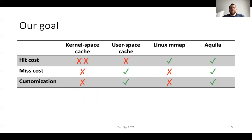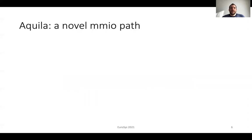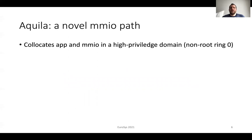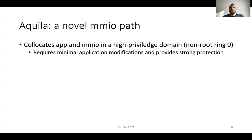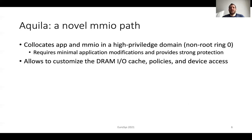Our work, named Akila, overcomes all of the Linux EMAP disadvantages. We leverage the efficient hit path of memory mapped IO and we provide an optimized miss path that removes the need for protection domain switches. We also enable customization of DRAM caching and device access similar to a user space cache. Our approach combines the advantages of a user space cache and memory mapped IO. Akila is a novel memory mapped IO path that collocates the user application and memory mapped IO path in a high-privileged domain known as root ring 0 in Intel terminology. Our approach requires minimal application modifications and provides strong protection semantics similar to Linux memory mapped IO.